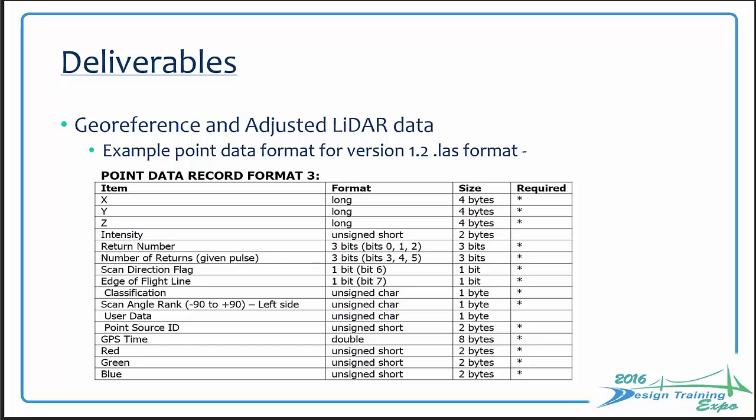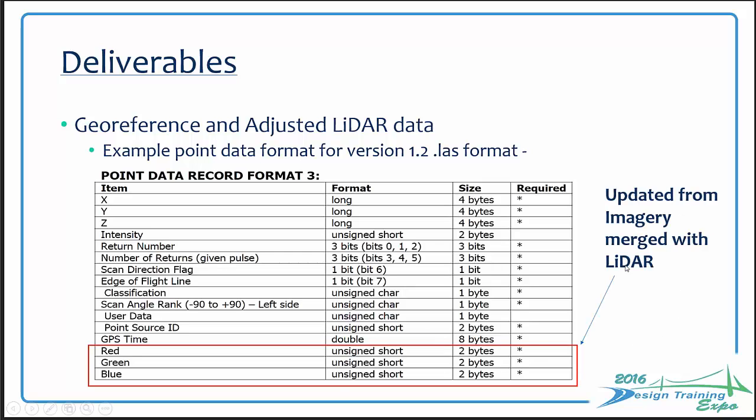Updated from imagery and merged with LiDAR — red, green, blue — there are many ways to do this. My first advice is to have the hardware vendor do it. Data collection devices like the Faro scanner (terrestrial) capture imagery and LiDAR together, and it's very easy to get RGB out of that right off the machine. Some mobile LiDAR requires other techniques. There are also softwares that let you come back after the fact, get imagery, and merge it — tools for that exist on the market.